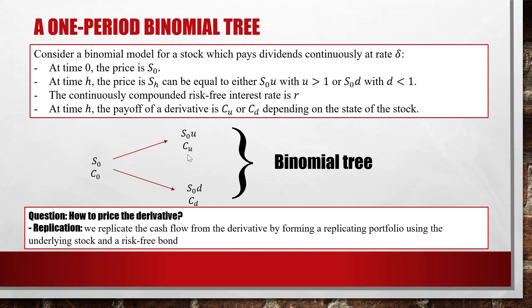Replication: we replicate the cash flow from the derivative by forming a replicating portfolio using the underlying stock and a risk-free bond. It's similar to the law of large numbers — when you flip a coin one time you cannot predict whether it lands heads or tails, but if you repeat it a large number of times, like 10,000 or 50,000, then the proportion of times the coin lands heads should equal the actual probability of landing heads. In the same way, in order to price the derivative we use replication.